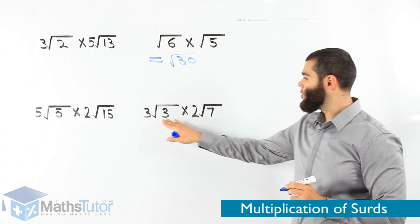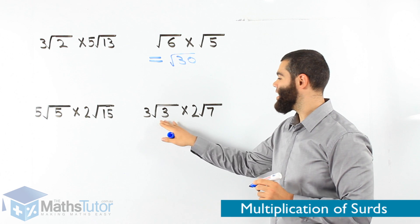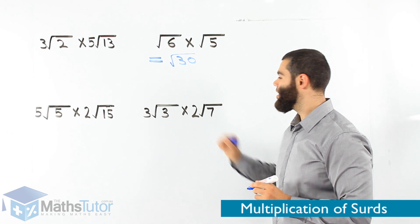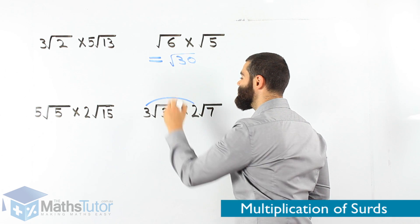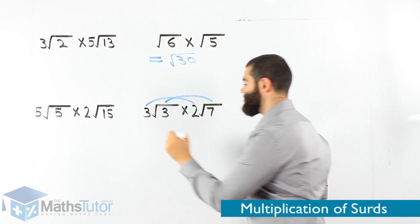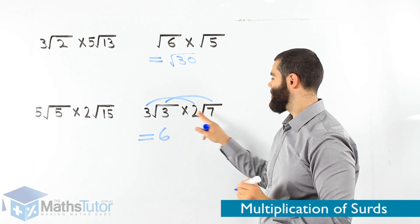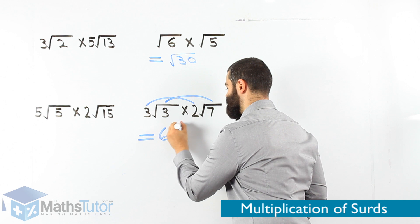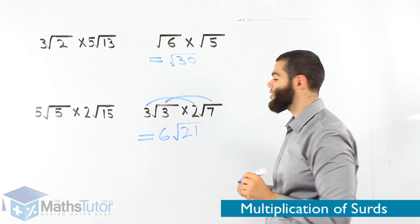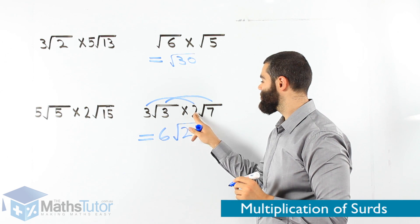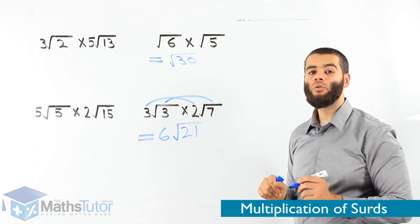This one here: 3 root 3 times 2 root 7. So we don't just have roots — we also have whole numbers as well. These multiply together and the roots multiply together. So 3 times 2 is 6, and root 3 times root 7 is root 21. So the answer is 6 root 21. 3 times 2 is 6 and 3 times 7 is 21 — 6 root 21.